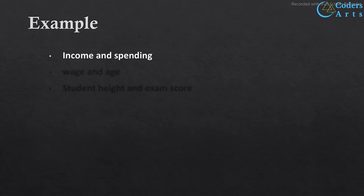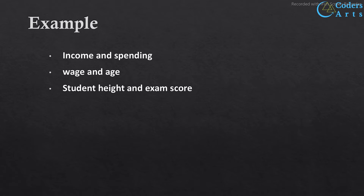As we expect, someone with higher income will generally spend more on a given product — this is a positive relationship between income and spending. We can also analyze the relationship between wage and age: we could ask whether people of higher age are more likely to earn more than those of lower age. We use a regression model to test if that relationship exists. Another example is student height and exam score — we should expect no relationship to exist between these two variables, and we can use the regression model to test that.